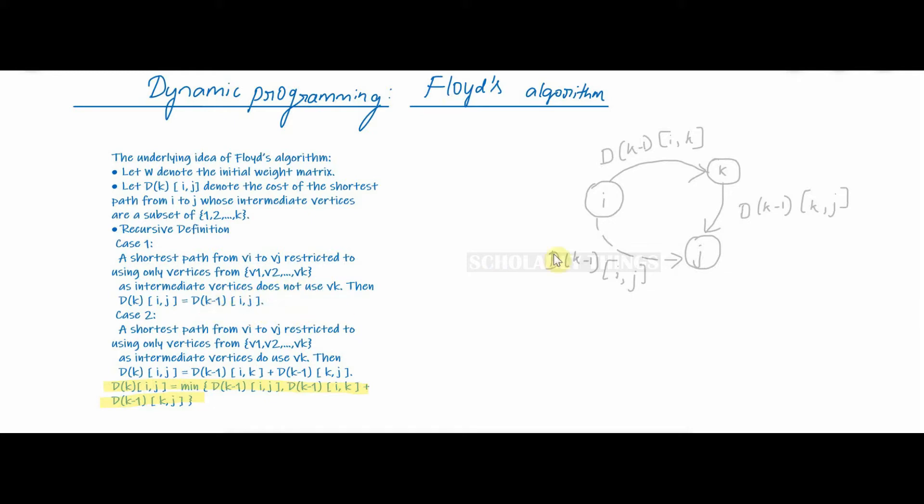This is when there is a path between i to j. The other case is the shortest path from vi to vj restricted to using only vertices from v1 to vk as intermediate vertices does use vk. That is using k as intermediate to find out the path between i and j.